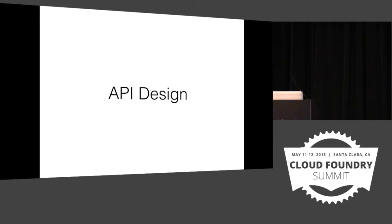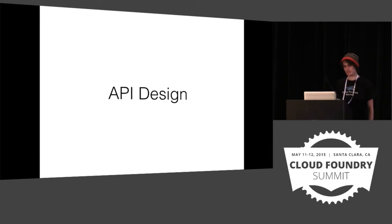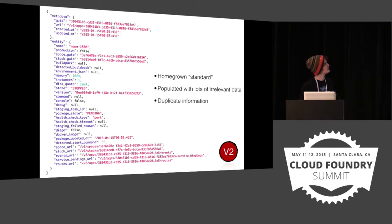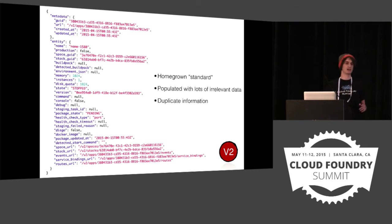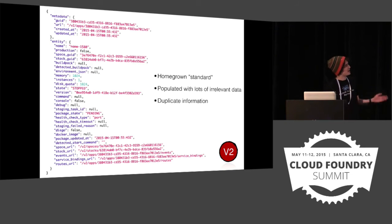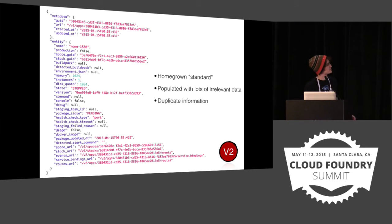Jim is going to talk about the API changes. Let's look at what a V2 app response looks like today. At the very top there's a metadata section containing basic information: the identifier, the path to fetch the current object, and timestamps like created-at and updated-at. Below that is a really big entity section — entity has truly become a dumping ground for any information associated with the object you're fetching. This is mostly a homegrown standard that doesn't adhere to any patterns, and it's drifting from the way public APIs are moving today.